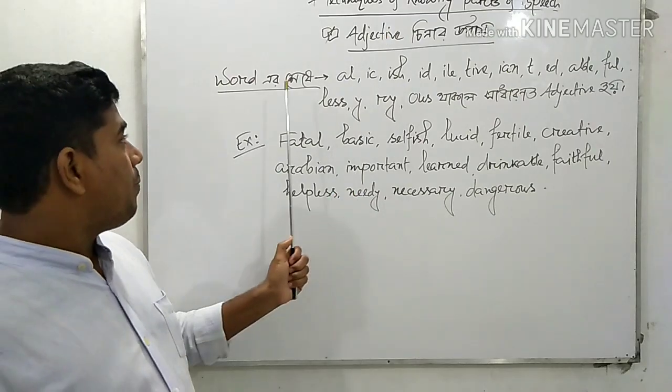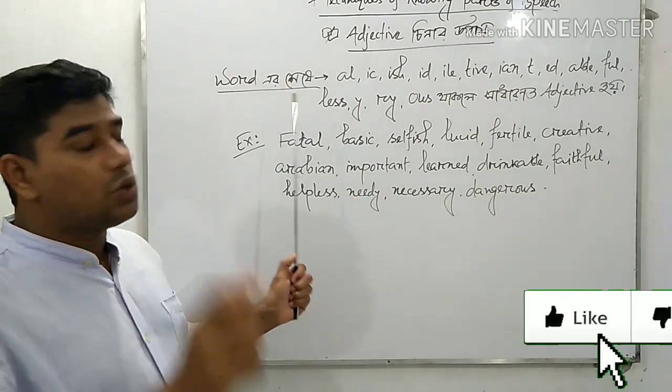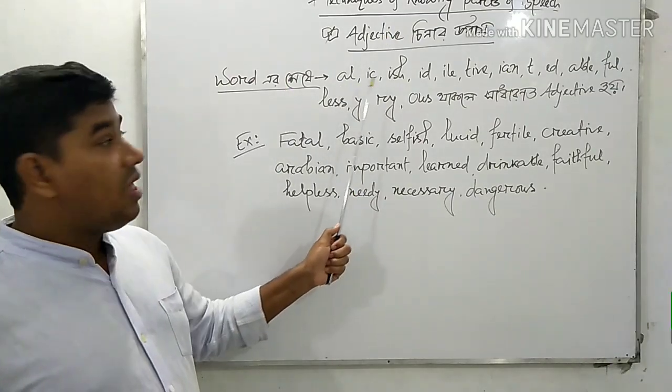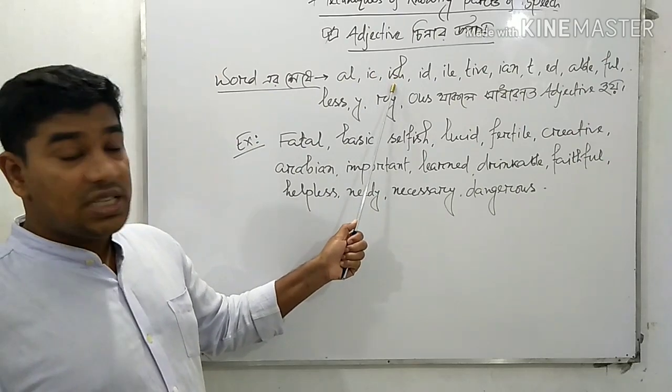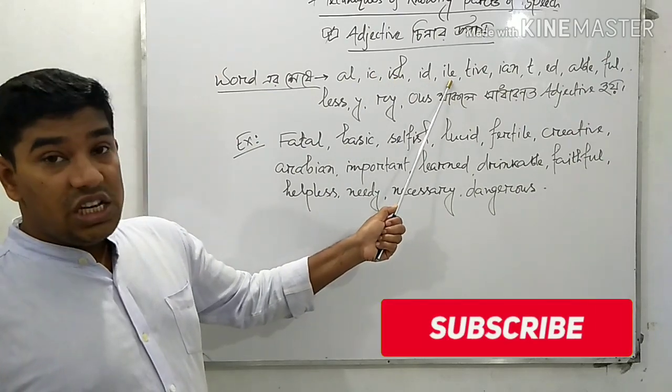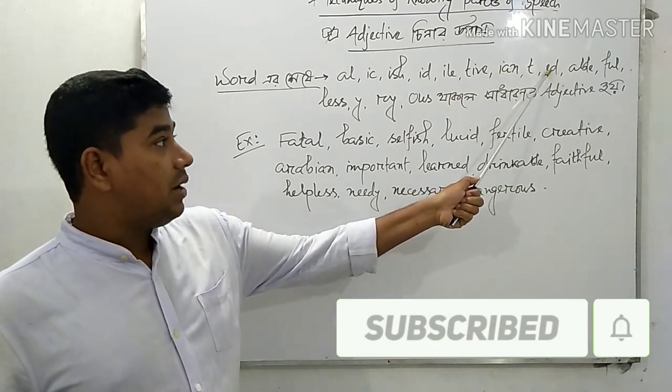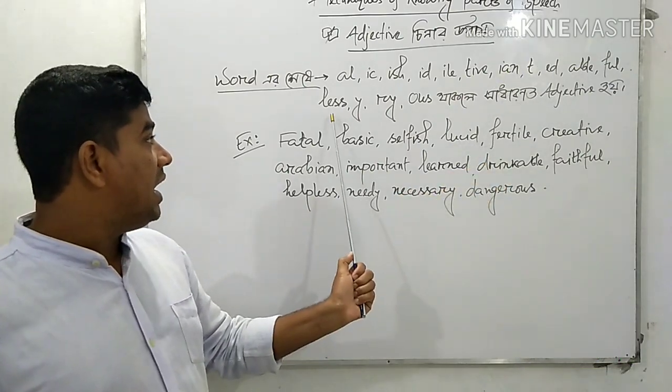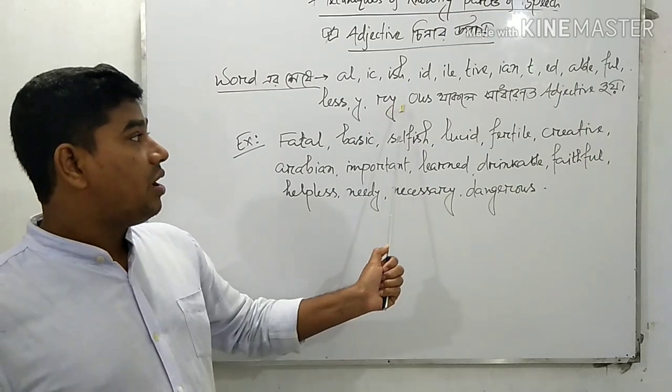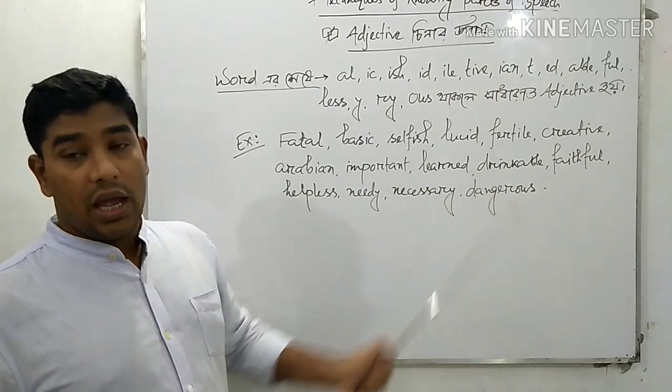Adjective suffixes include: A-L, I-C, I-S-H, I-D, I-L-E, I-V-E, E-N-T, I-N-G, E-D, A-B-L-E, F-U-L, L-E-S-S, Y, I-O-U-S, O-U-S.